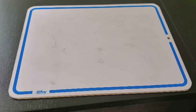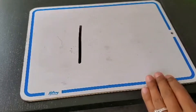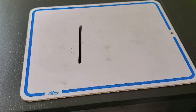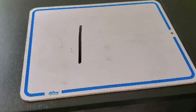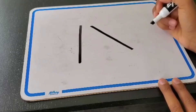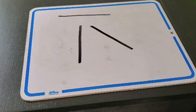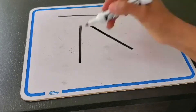Let's get started. This type of line is called a straight line. A straight line is exactly what it sounds like — it's just straight. There are no bends, no curves. These are called straight lines.